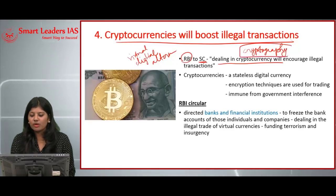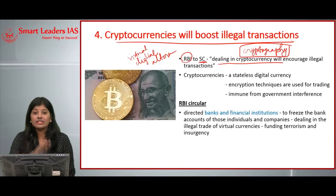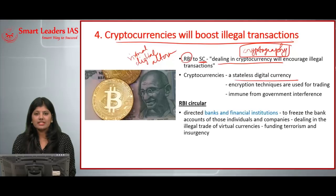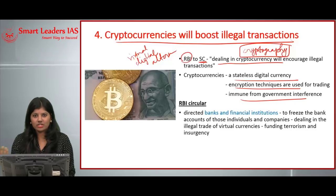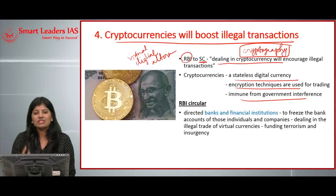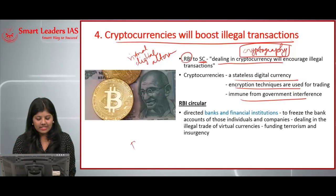Cryptocurrencies are stateless digital currencies using encryption techniques for trading. They are immune from government interference — not regulated by the RBI or any government body — making them a vulnerable platform for encouraging illegal transactions. Cryptocurrencies work on blockchain technology, which is essentially a distributed ledger — a list of records containing member names and their associated financial details.